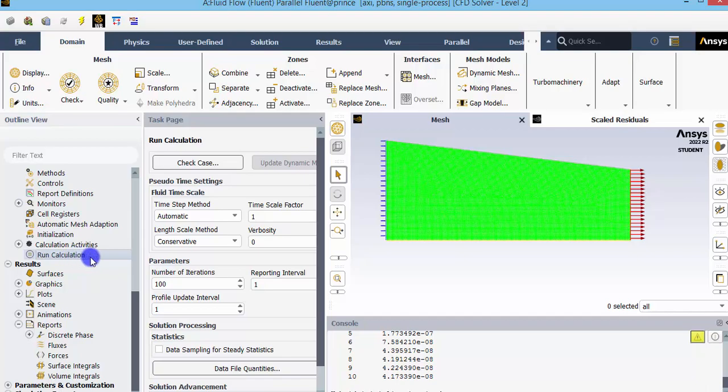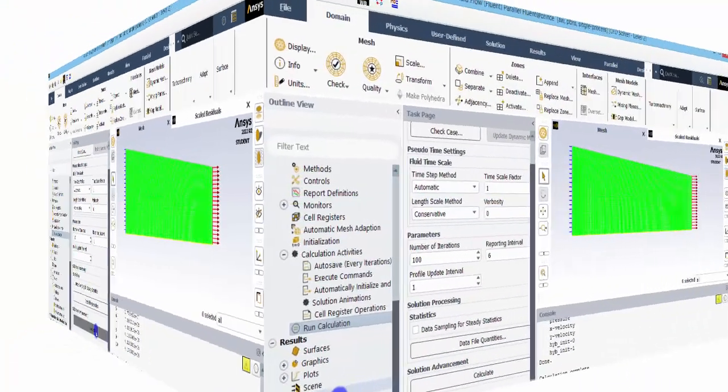Once you have set all these boundary conditions and the cell zone conditions, you can go to initialization and initialize the problem. Then go to run calculation and solve for a number of 100 iterations. Once the calculation is complete,